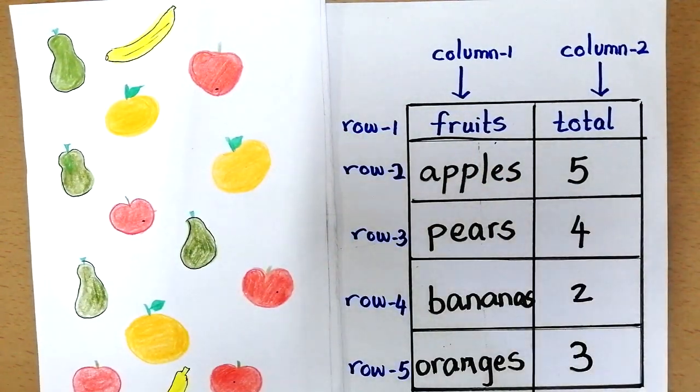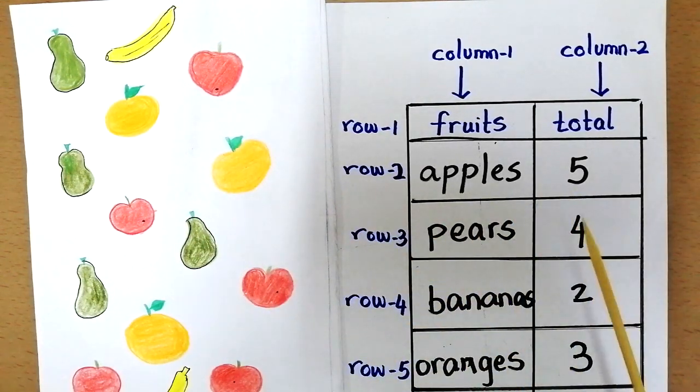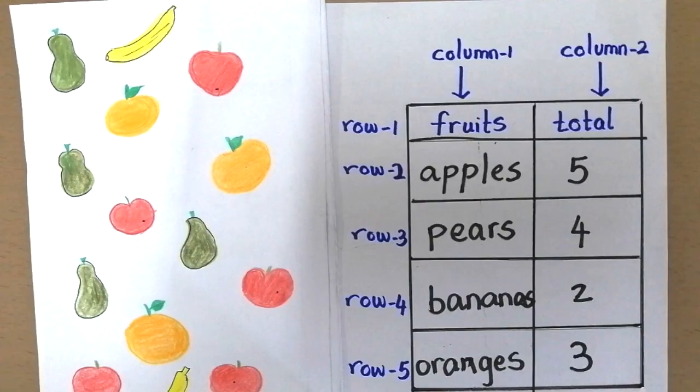And we have two bananas and one, two, three oranges. Now our table gives the complete information about the fruits that are shown here. All right, I hope you all enjoyed today's math lesson.